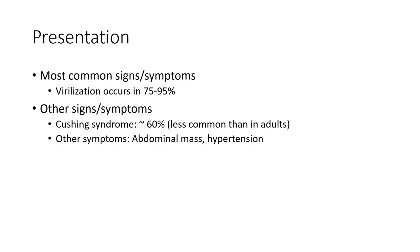Most common signs and symptoms: virilization occurs in 75 to 95%. Other signs and symptoms include Cushing syndrome in around 60%, which is less common than in adults. Additional symptoms include abdominal mass and hypertension.